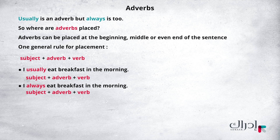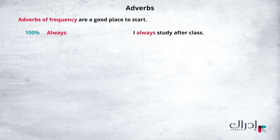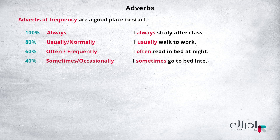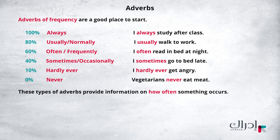Adverbs of frequency are a good place to start. Let's look at the chart. These types of adverbs provide information on how often something occurs. 100%: Always — "I always study after class." 80%: Usually, Normally — "I usually walk to work." Often, Frequently — "I often read in bed at night." 40%: Sometimes, Occasionally — "I sometimes go to bed late." 10%: Hardly ever — "I hardly ever get angry." 0%: Never — "Vegetarians never eat meat." You can also think of them as adverbs of time.